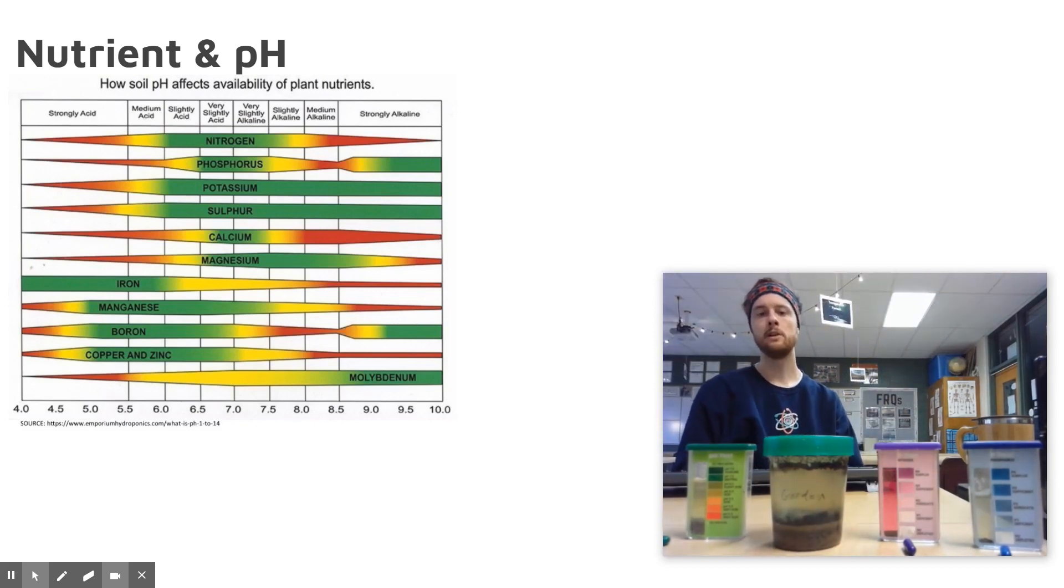Really helpful here for an inquiry lab because you can have students test either the soil of different locations, maybe one where there's more organic matter or one where they think there's a faster rate of decomposition. You can even have them test soil from a potted plant at home or soil from bagged soil at a garden store. So you have a lot of possibilities here for doing inquiry-based lab with respect to both pH and nutrient levels.